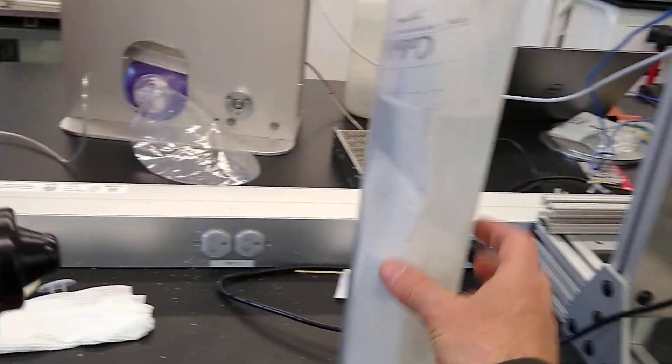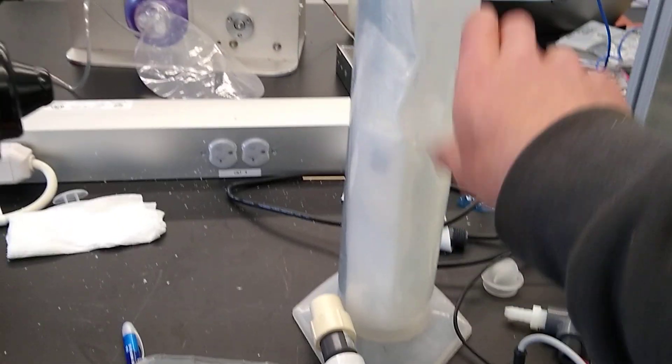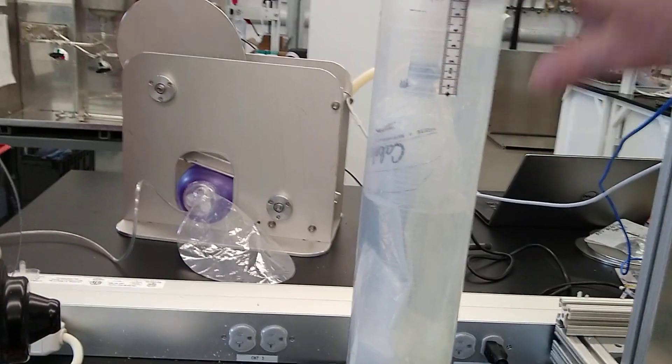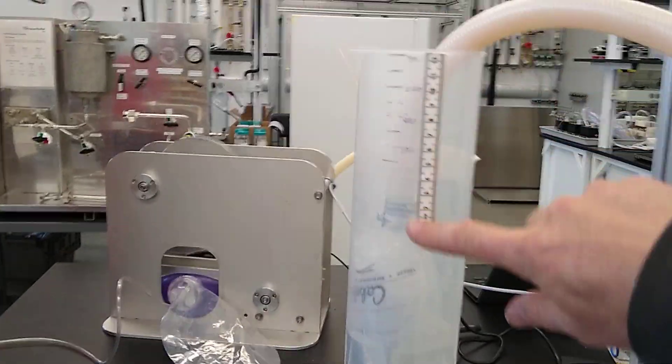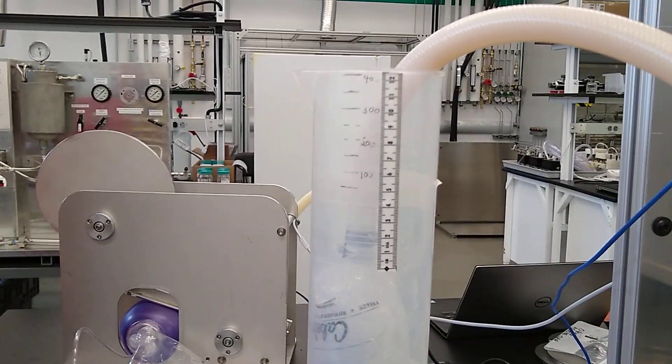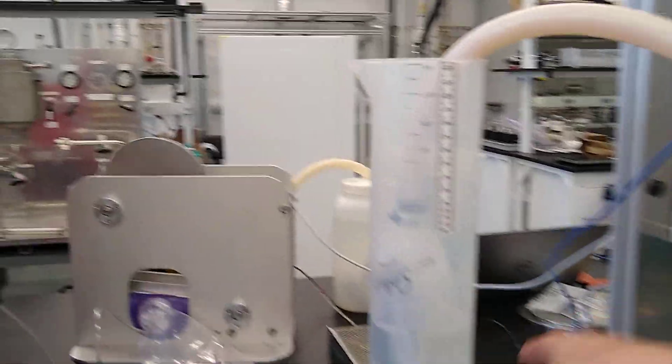bag with weight inside of it. This is a vacuum sealing bag with about one and a half kilograms of metal in it so that it sinks to the bottom. We have this water column. Once we get a little bit of air in the lung, the water level is